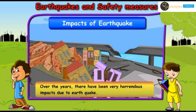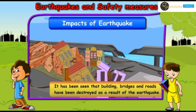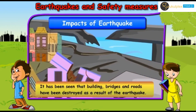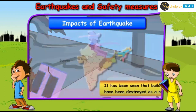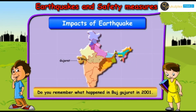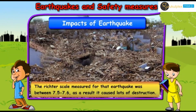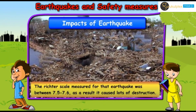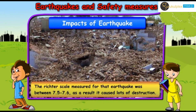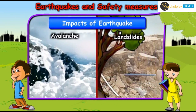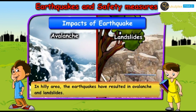Over the years, there have been very horrendous impacts due to earthquakes. Buildings, bridges, and roads have been destroyed as a result. Do you remember what happened in Bhuj, Gujarat in 2001? The Richter scale measured for that earthquake was between 7.5 to 7.6, and it caused lots of destruction. In hilly areas, earthquakes have resulted in avalanches and landslides.